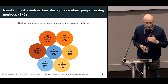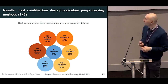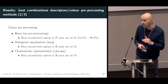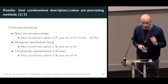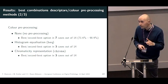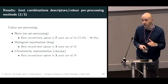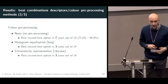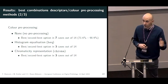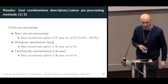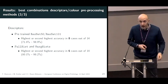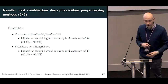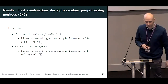These are the absolute accuracy values — not very interesting as absolute values; it is more interesting to see what happened on a relative basis. It turns out that doing nothing — applying no color pre-processing — was the best or second-best option in 7 cases out of 14. Histogram equalization was the best or second-best in 3 cases, as was chromaticity representation. Regarding image descriptors, CNN-based networks performed best or second-best in 8 cases out of 14, and color histograms in 6 cases.